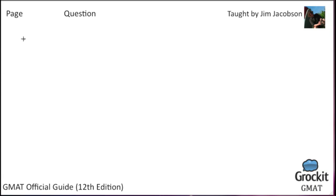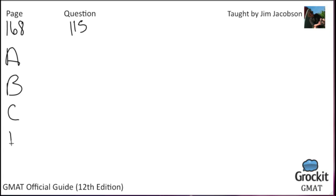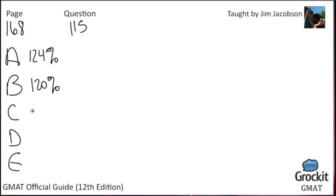Number 115, page 168. Answer choices are 124%, 120%, 96%, 80%, and 64%. Mary's income is 60 percent more than Tim's income, and Tim's income is 40 percent less than Juan's income. What percent of Juan's income is Mary's income?